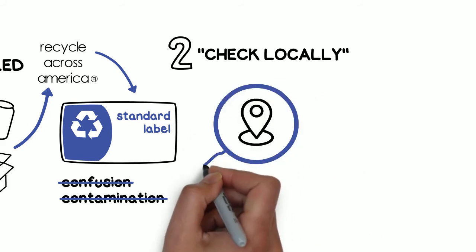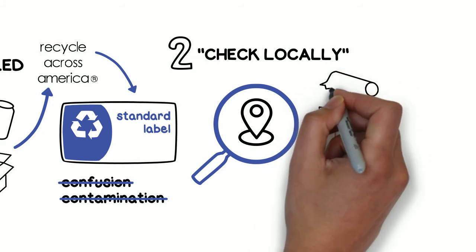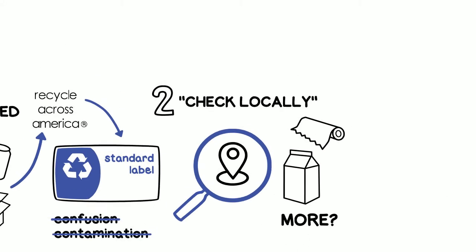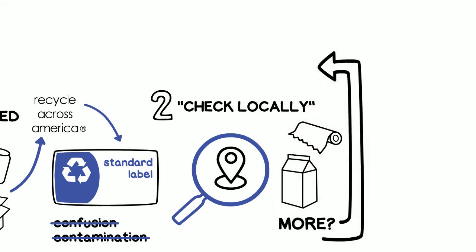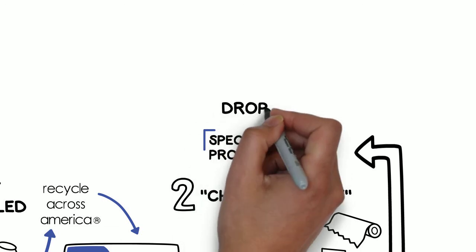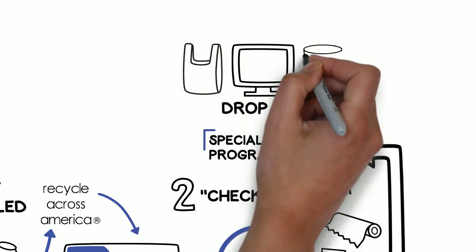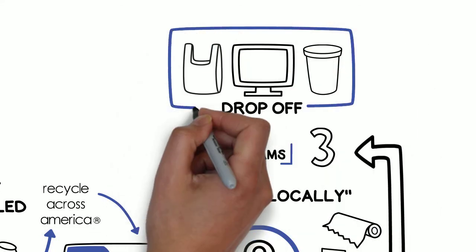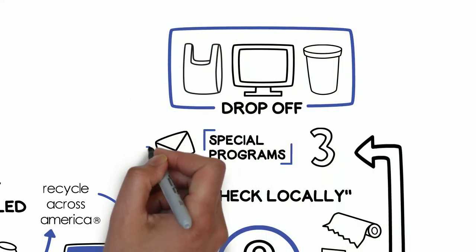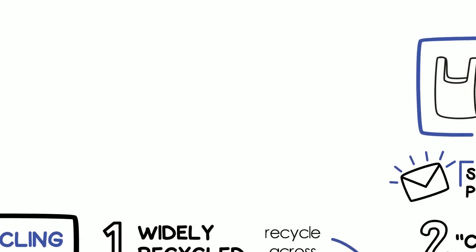If you want to recycle even more, then the third category is recycling through special programs. You might be able to drop off recyclables such as plastic bags, electronics, and styrofoam at designated locations. You can also mail some items directly to certain organizations.